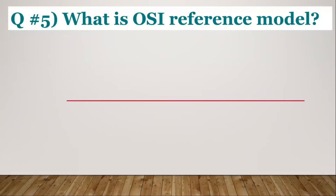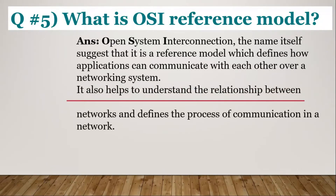Question number five: What is the OSI reference model? Open System Interconnection — the name itself suggests that it is a reference model which defines how applications can communicate with each other over a networking system. It also helps us to understand the relationship between networks and defines the process of communication in a network.